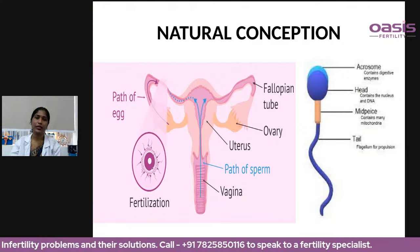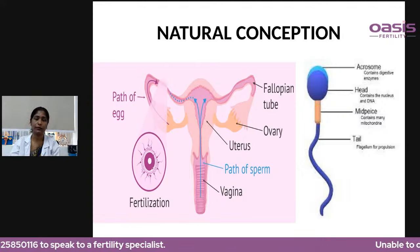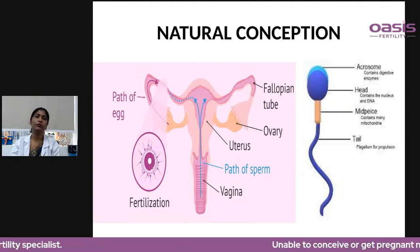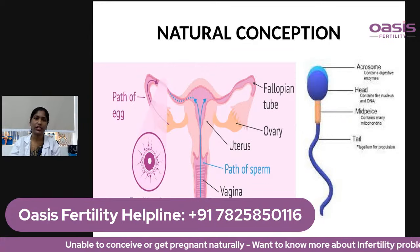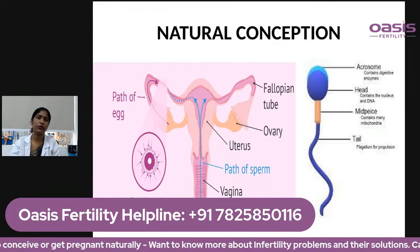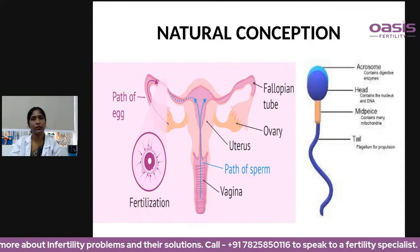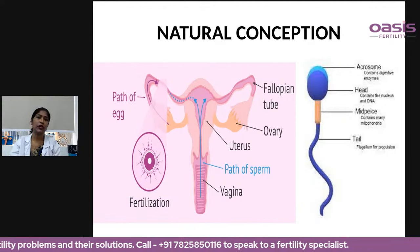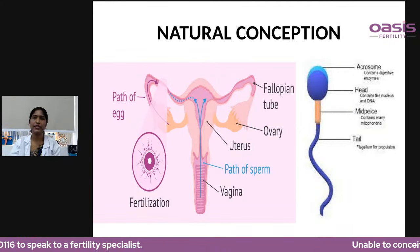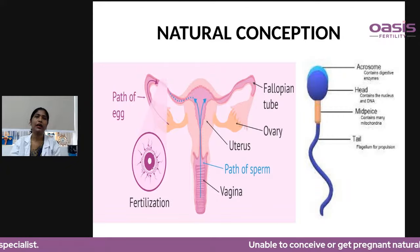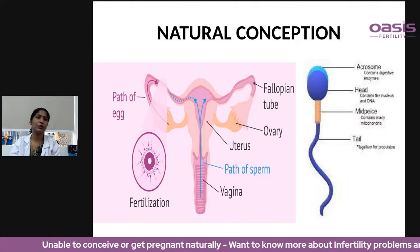Before we go into the IVF part, it is important that we understand how natural conception happens. Every month, from a female's ovary, there is a release of one healthy egg — this process is called ovulation. The egg gets released from the ovary and enters the fallopian tube. At the same time, intercourse happens and sperms travel from the vagina into the fallopian tube, where the sperm and egg meet, fertilization occurs, and the embryo develops. After three days inside the fallopian tube, the embryo travels into the uterus where the pregnancy grows.